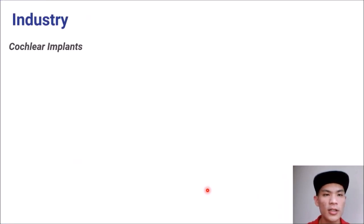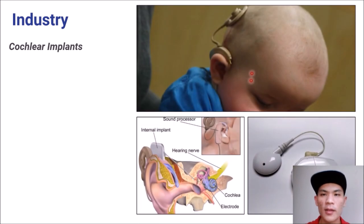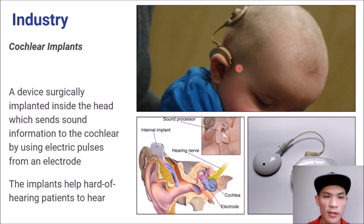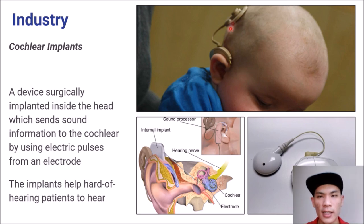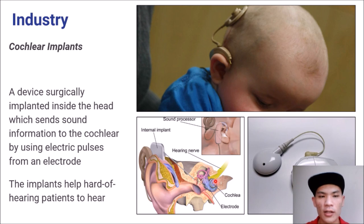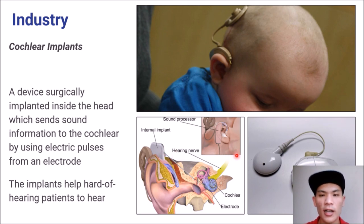A cochlear implant is a device surgically implanted inside the head. We send information to the cochlea using electric pulses from an electrode. These implants help hard-of-hearing people to hear.